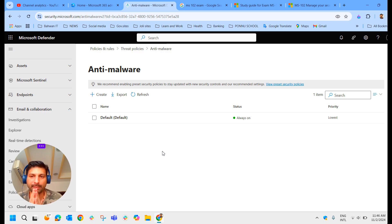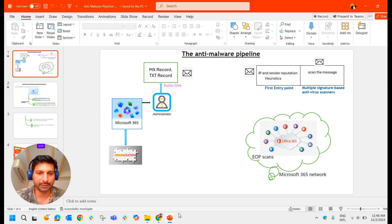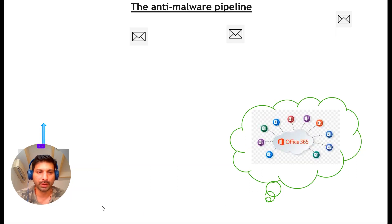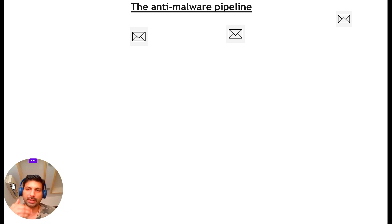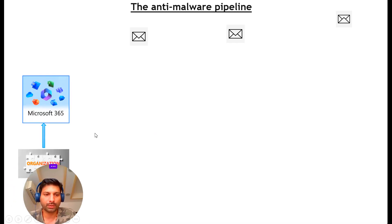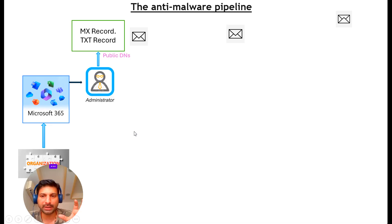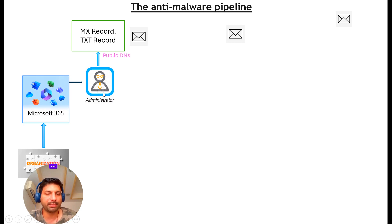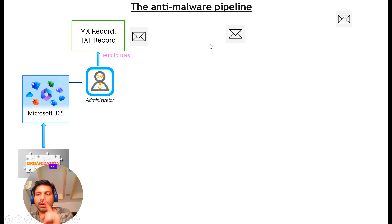To understand how the anti-malware pipeline works, I have created a PPT. Organizations that host mailboxes in Exchange Online rely on Exchange Online Protection to protect incoming and outgoing mail. When an organization joins Microsoft 365, an administrator must specify MX and TXT records for their domain name in DNS. The MX record ensures that email sent to the tenant's domain arrives at the mailbox hosted in Exchange Online via the EOP service.